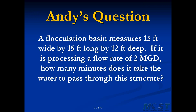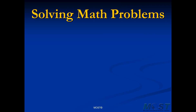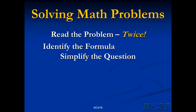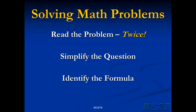In our water math classes at MOST, we emphasize a four-step procedure to begin every problem. First, we read the problem, and then we read it again. We want to make sure that we're answering the right question, and oftentimes these math problems sound different the second time through, or even the third time through. Read it as many times as you need to be absolutely clear on what the problem is asking before you move forward. Then simplify the question — make it just three or four or five words, if at all possible.